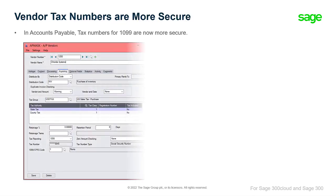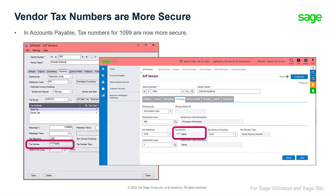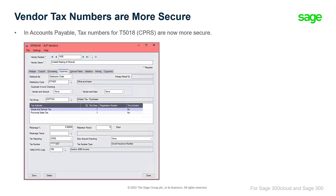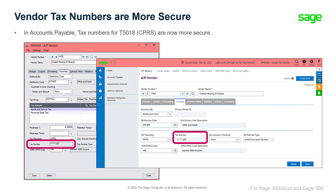In Accounts Payable, tax numbers for vendors — such as Social Security numbers and Social Insurance numbers — are now more secure. By default, tax numbers now cannot be entered or changed and are masked so that only the last four characters in the number are displayed.